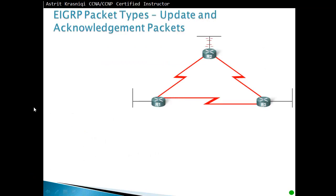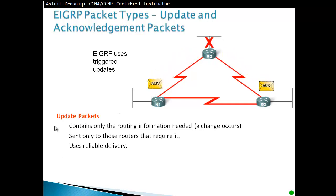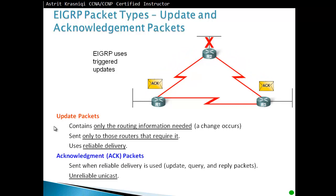EIGRP update and acknowledgement packets: when a network goes down, the router notifies its neighbors with an update containing only the routing information about what changed, sent only to routers that require it, using reliable delivery. EIGRP uses triggered updates — only when something changes does it notify neighbors. Neighbors must acknowledge the update. Acknowledgement packets are sent as unreliable unicast directly to whoever sent the update, not to 224.0.0.10.